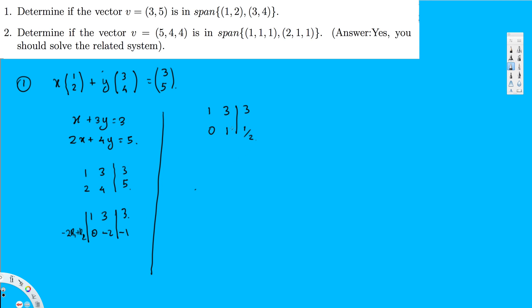I'm using Gauss-Jordan elimination, so values both below and above the pivot should be 0. To eliminate the 3 in row 1 above the pivot, I do -3R2 + R1. Negative 3 times 1/2 is -1.5, and -1.5 + 3 = 1.5, or 3/2. This gives the reduced form [1, 0 | 3/2] and [0, 1 | 1/2]. So x = 3/2, y = 1/2, and therefore v is in the span.